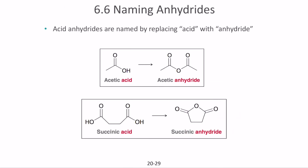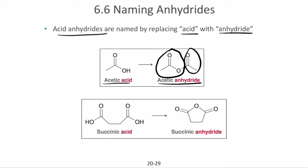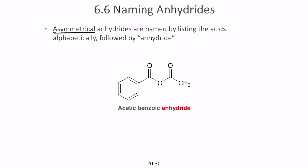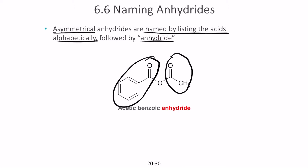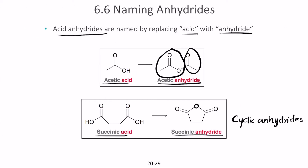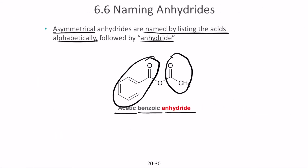Acid anhydrides are named by replacing 'acid' with 'anhydride.' Acetic acid combined with another carboxylic group becomes acetic anhydride — removing both OH groups and combining them with a bond between the two carbonyl carbons. Asymmetric anhydrides are named by listing the acids in alphabetical order followed by 'anhydride.' For example, one side acetic and one side benzoic gives 'acetic benzoic anhydride.' If both sides are the same you write the acid name only once.